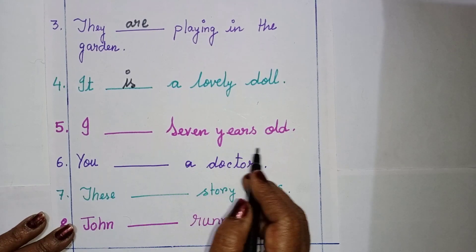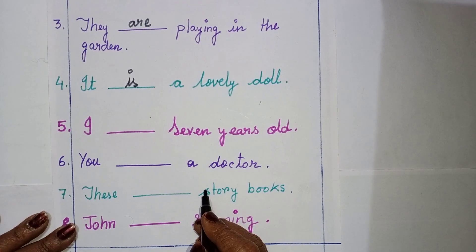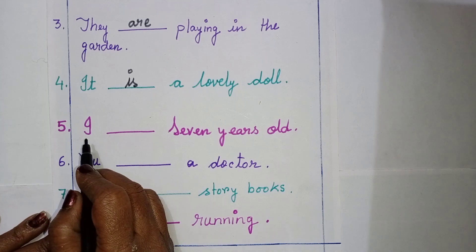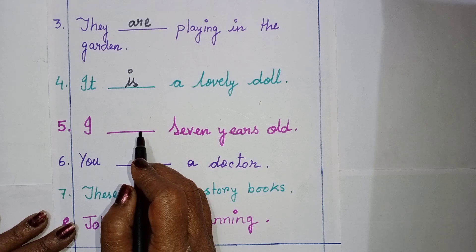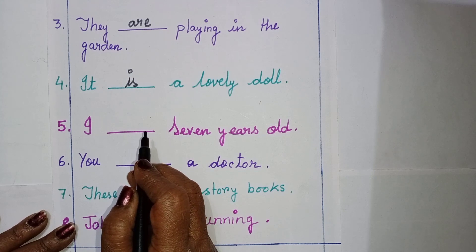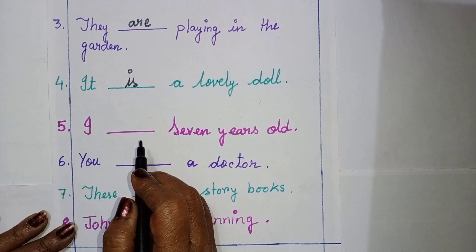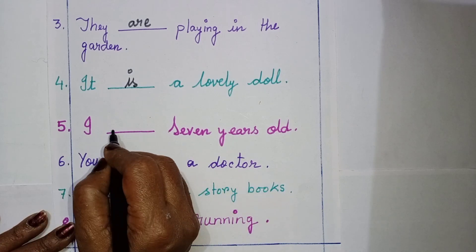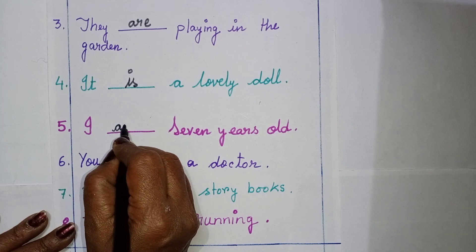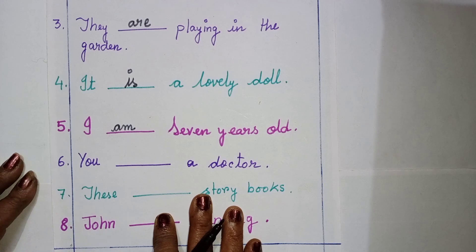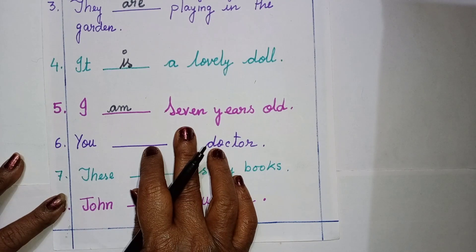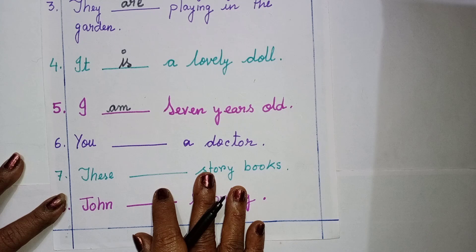Number five: I dash seven years old. Here, what will you write, children? As I said while teaching — am will always go with I. So I am seven years old. If anybody is asking how old are you, you say I am seven. Your age — you will say it is six, or seven, or eight — whatever your age is.